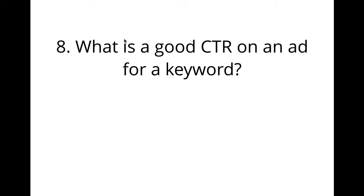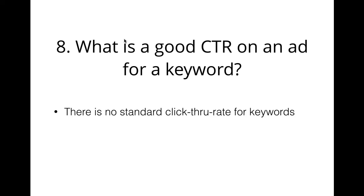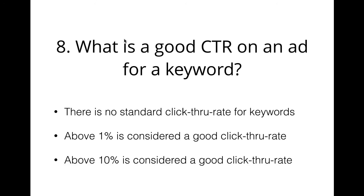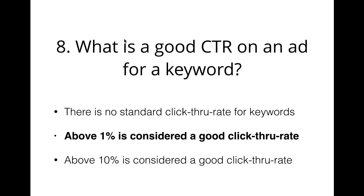Number eight: what is a good CTR on an ad for a keyword? CTR here is click-through rate. Options are: there is no standard click-through rate for keywords, above 1% is considered good, or above 10% is considered good. There is actually a standard for this. Different keywords are like different store locations — they're going to have different conversion rates. It's not above 10%; if you have above a 10% click-through rate, it must be really targeted or you're at the jackpot. By Google standards, a good click-through rate is between 1% and 3%.